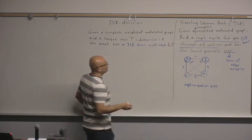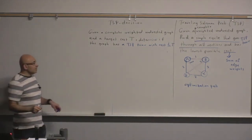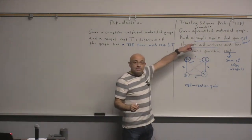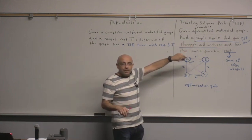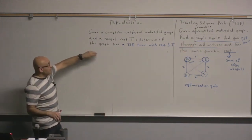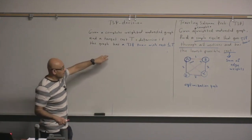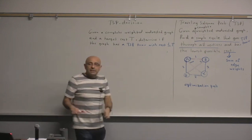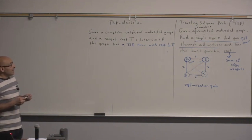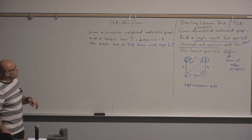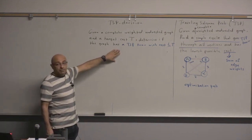What's the difference between these two formulations? The optimization form is open — find the best possible TSP tour. The decision form asks: determine if there is a TSP tour with cost less than or equal to T. Now, this decision problem is still not easy. In fact, this problem is NP-complete.